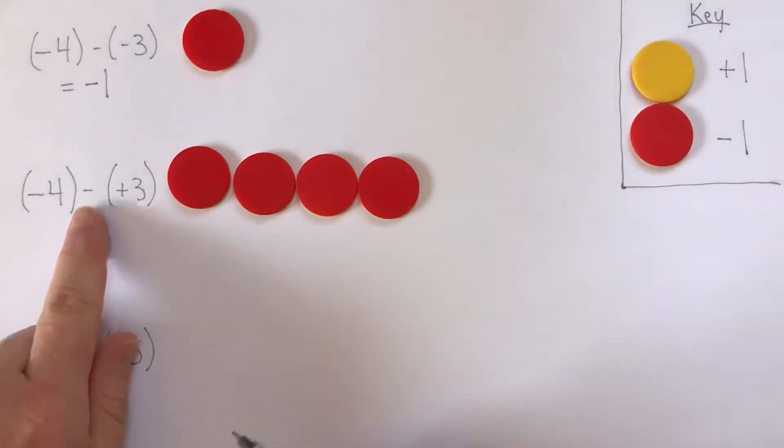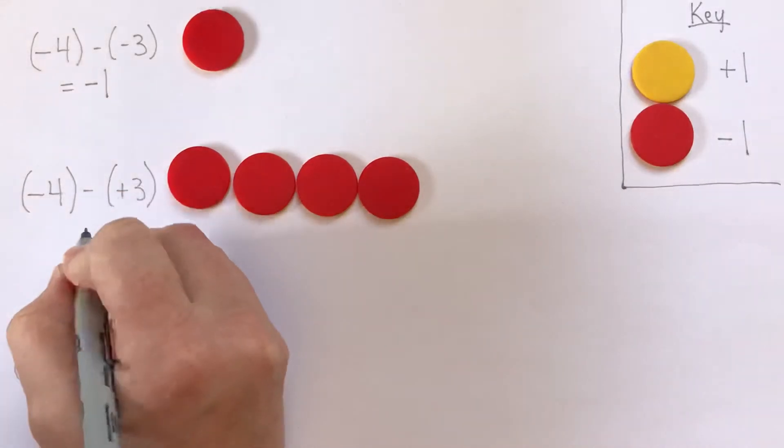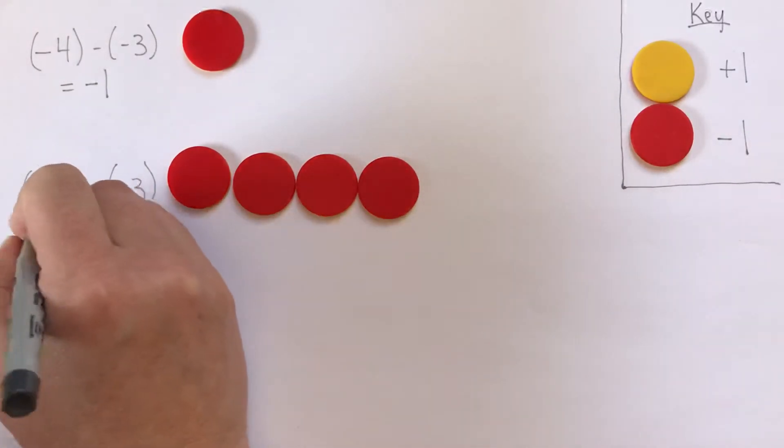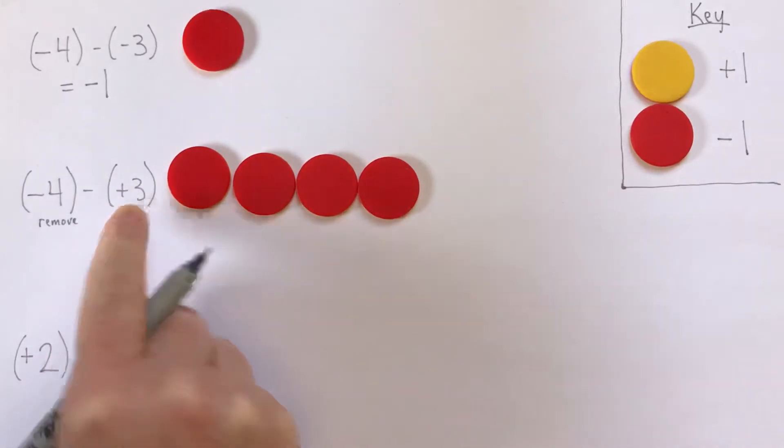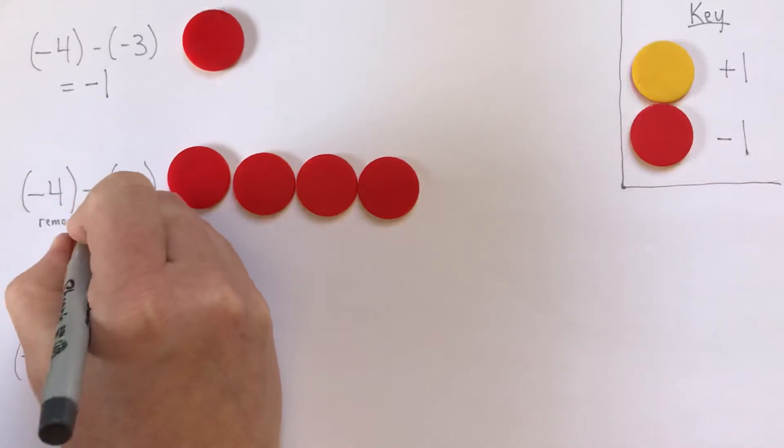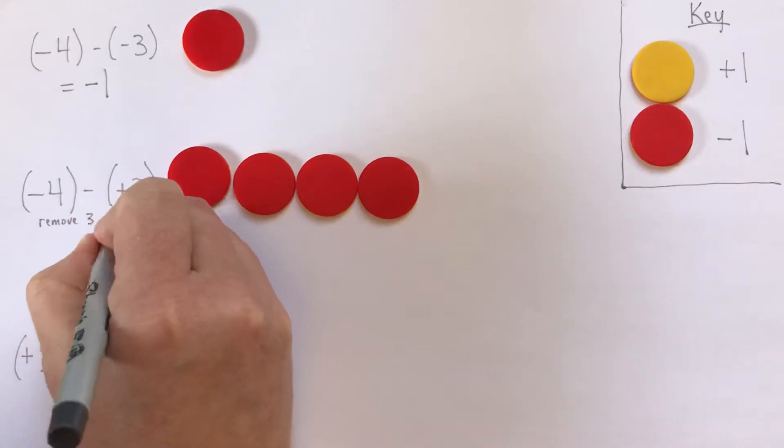And we want to take away or subtract positive 3. So we should maybe just make a note to ourselves. What we want to do is remove positive 3, which is yellow. So we want to remove 3 yellows.